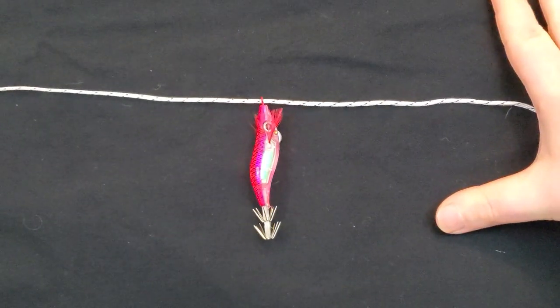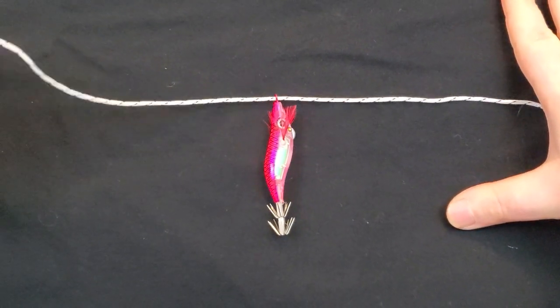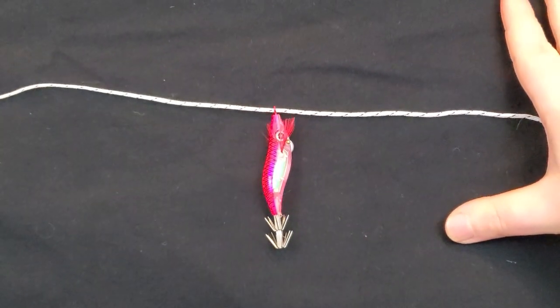To demonstrate how to tie the dropper loop, I'm going to use this rope because it's easier to see than the monofilament.